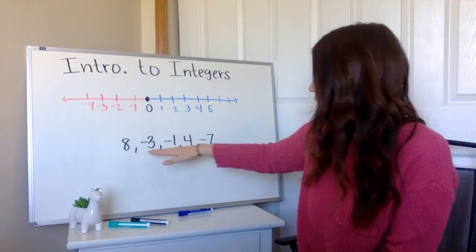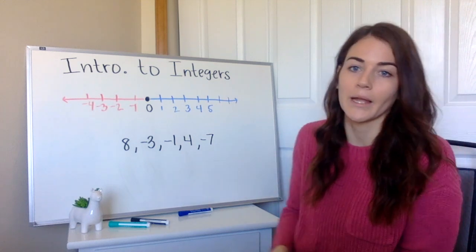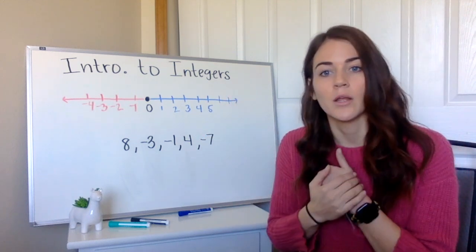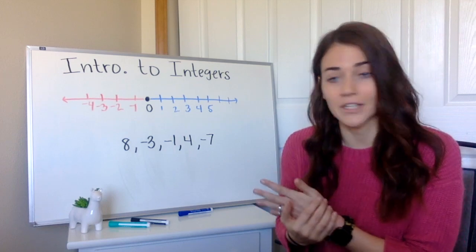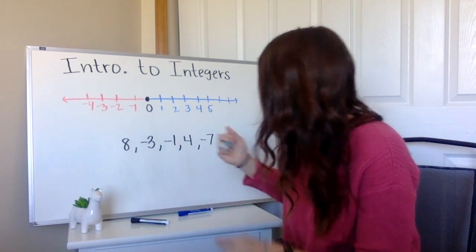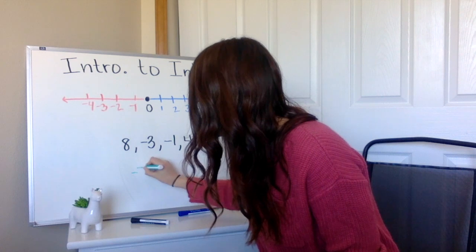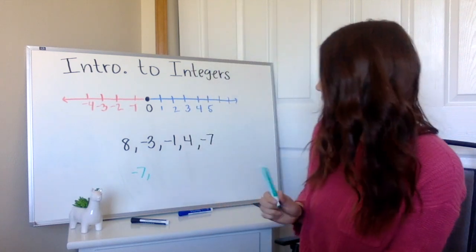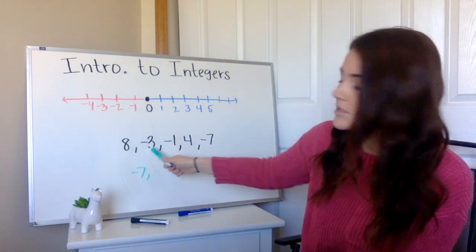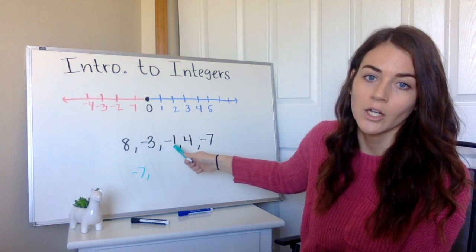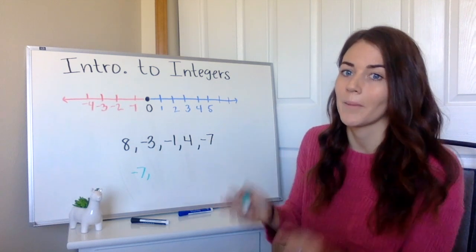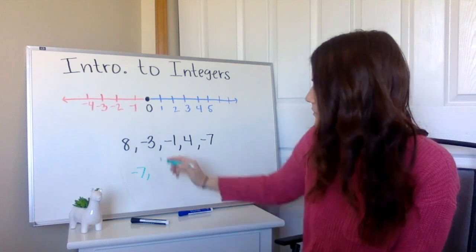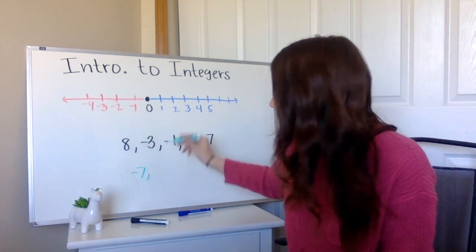So if I'm looking here, which one is my biggest number but a negative? Negative seven. So negative seven is going to be my smallest. And then if I'm looking at my last two negatives that are left here, which one of those is my smaller negative or my bigger number. Negative three. Negative three would come next.